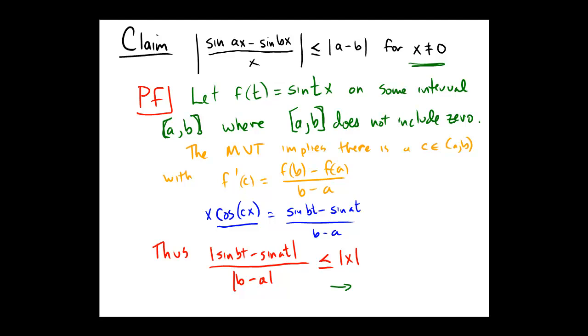Oops, these over here should be x's. bt at would be bx ax, I apologize for that. But the end result would be sine bx minus sine ax over x would be less than or equal to b minus a.